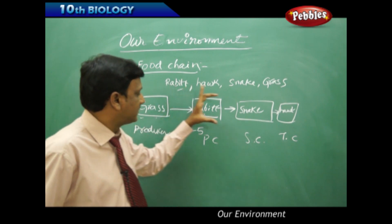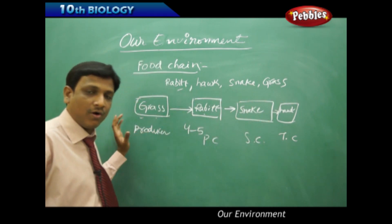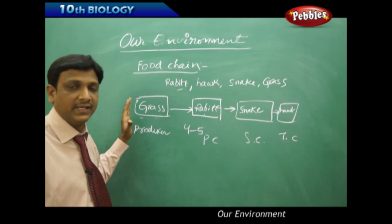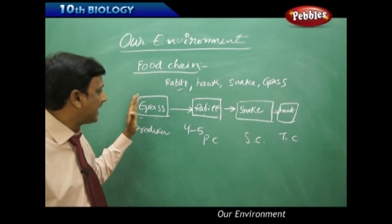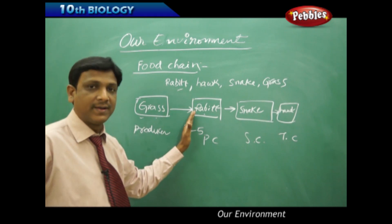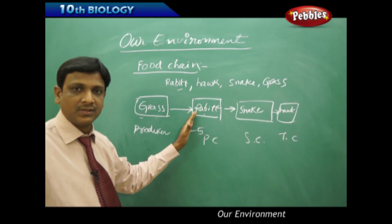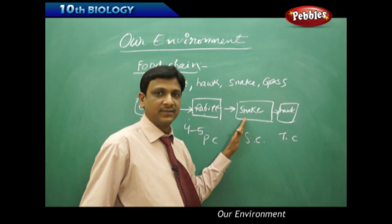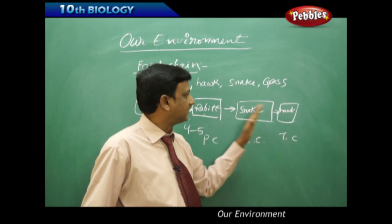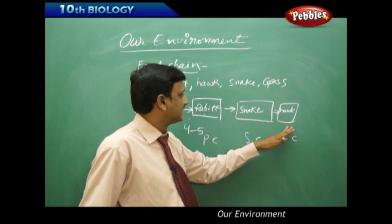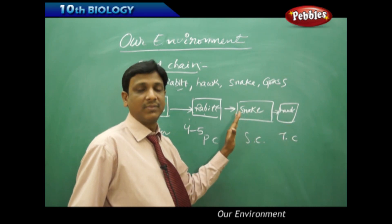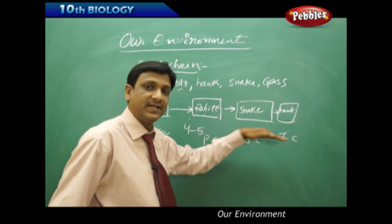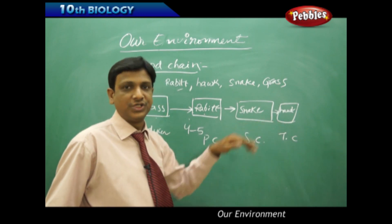One more important point we observe is that the organisms at the beginning of the food chain are present in large numbers. You see a lot of grass compared to the number of rabbits; the number of rabbits is always more than the number of snakes; and the number of hawks is always less than the number of snakes. So the number of organisms decreases as we proceed forward in the food chain.